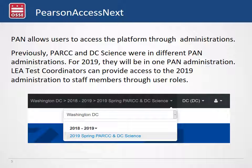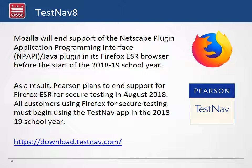Pearson Access Next allows users to access the platform through administrations. Previously Park and DC Science were in different administrations, so you may have noticed that you had to toggle between the two. One update for this year as we merge these two assessments into one program is that for 2019 both assessments will be in one administration, visible in the upper right-hand side of the screen together as '2019 Spring Park and DC Science.' Additionally, Mozilla is no longer available as a web browser for taking the assessment. We recommend all schools use the TestNav application, which can be downloaded to student devices and is the best option for testing this year.